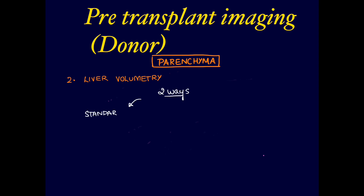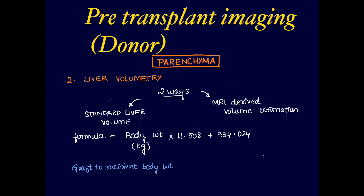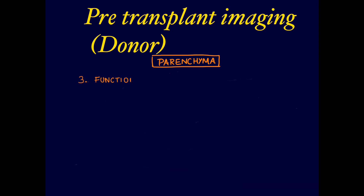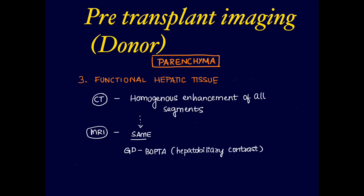Next in parenchymal imaging is liver volumetry. There are two methods: the standard liver volumetry formula (body weight in kg × 11.508 + 334.024) and MRI-derived volume estimation using artificial intelligence. The graft-to-recipient body weight ratio should be 1:100 to avoid a small-sized graft. On CT or MRI, homogeneous enhancement of all liver segments using a hepatobiliary contrast agent like gadolinium-BOPTA confirms good hepatic function.